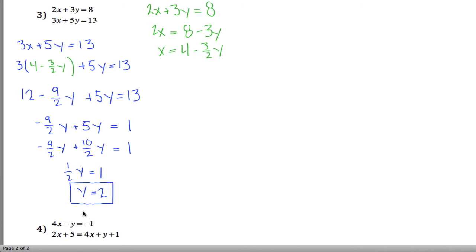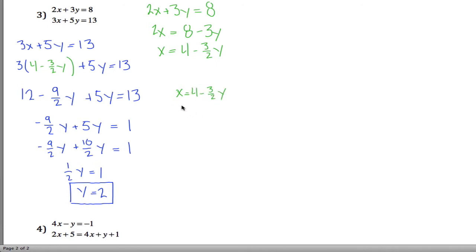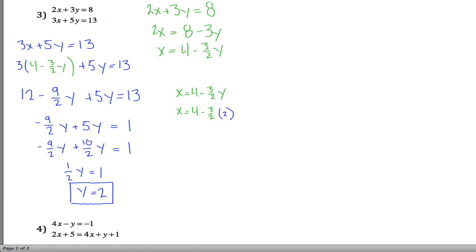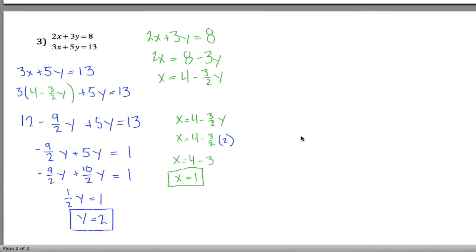Substitution was difficult on this problem. We got y equals 2, so now we go back to our equation where x is solved: x equals 4 minus three-halves y. Rewrite it replacing y with 2. Three-halves times 2 — think of 2 as 2 over 1 — gives 6 halves, which is 3. So x equals 4 minus 3, which is x equals 1. We end up with pretty answers x equals 1 and y equals 2, but getting there was hard because of the fractions.